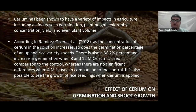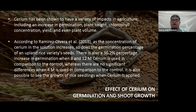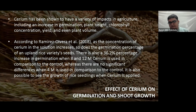The effect of cerium on seed germination and seedling growth: cerium has been shown to have a variety of impacts in agriculture, including an increase in germination, plant height, chlorophyll concentration, yield, and plant volume. According to Ramirez-Alvarez et al. 2018, as the concentration of cerium in solution increases, so does the germination percentage of upland rice variety seeds. There was a 36.2% increase in germination when 8 and 12 micromolar cerium was used compared to the control, while no significant difference was found at 4 micromolar. It is also possible to observe the growth of rice seedlings when cerium is applied.